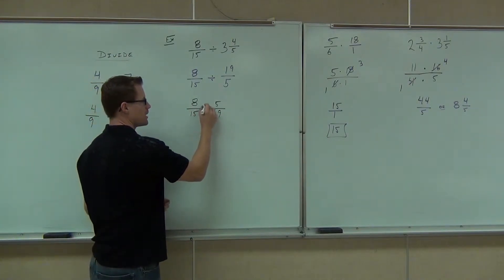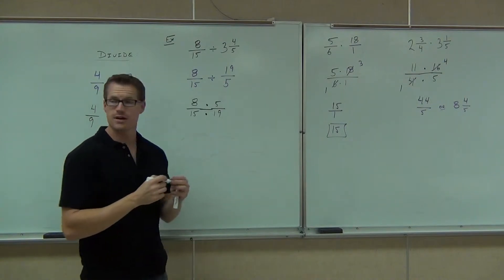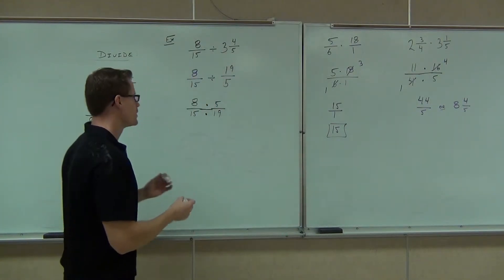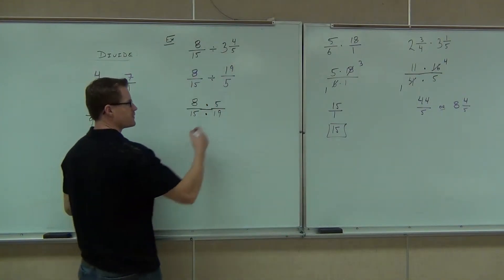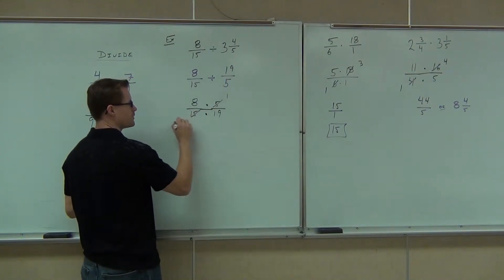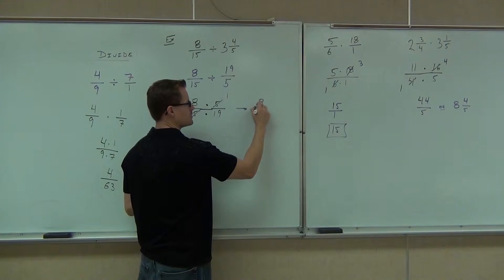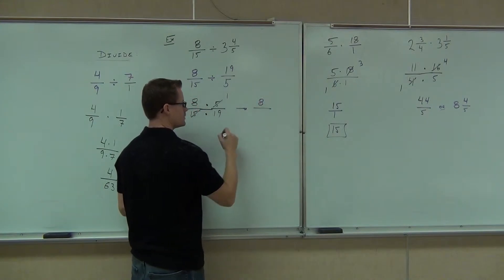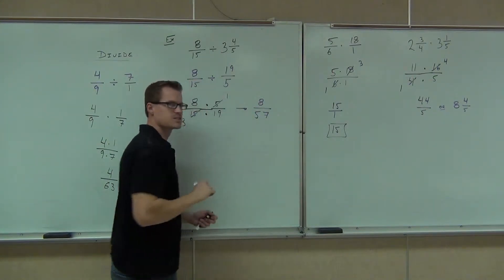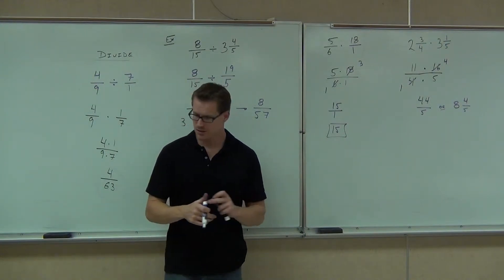Extend our line. Five and fifteen — those are going to simplify. Nineteen is a prime number. But five and fifteen have a common factor of five, so you get one and three. Our answer is going to be eight fifty-sevenths. Did you get eight fifty-sevenths if you did that on your own?